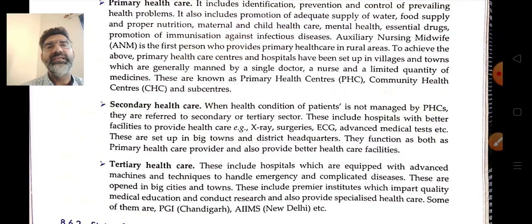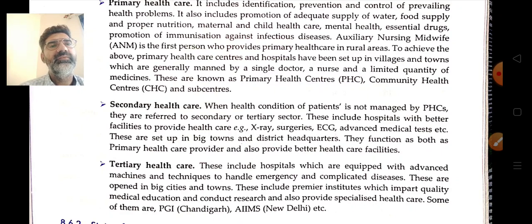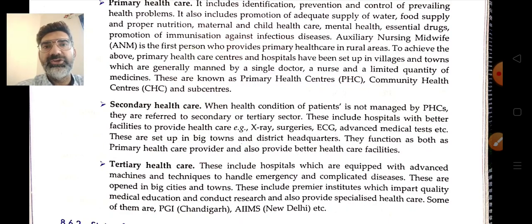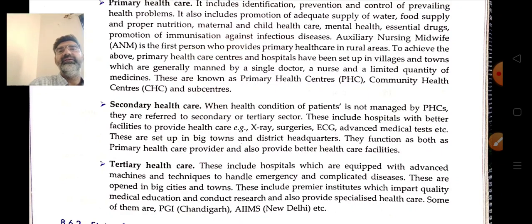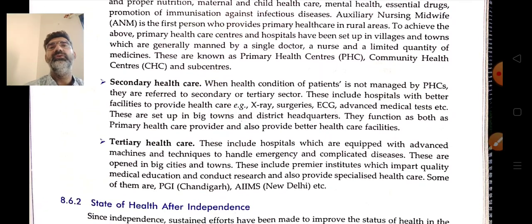The tertiary health care tier includes hospitals with advanced machines, latest technology, and facilities to handle emergencies and complicated diseases. These institutions also impart medical education and conduct research. Examples include PGI in Chandigarh and AIIMS in New Delhi, which are referred to as tertiary health care centers.